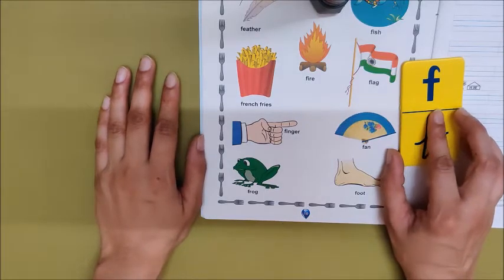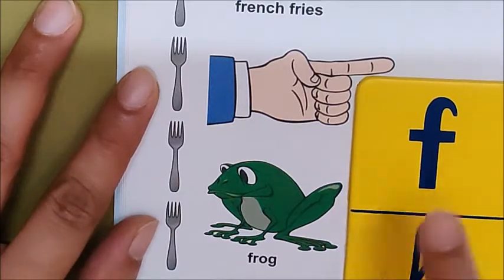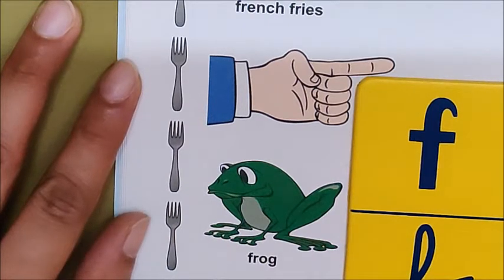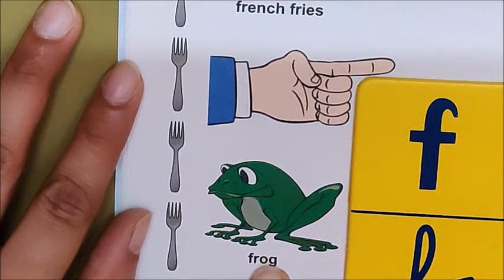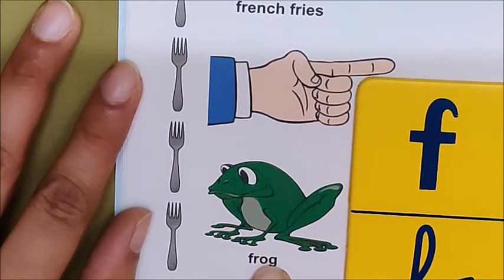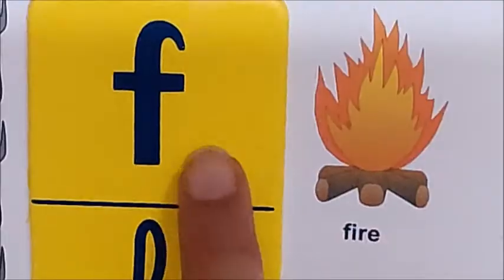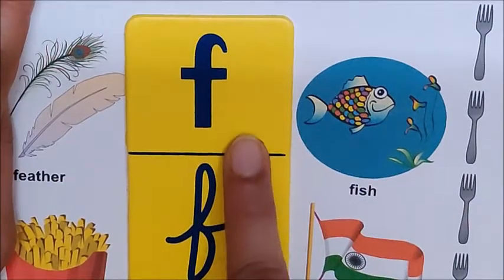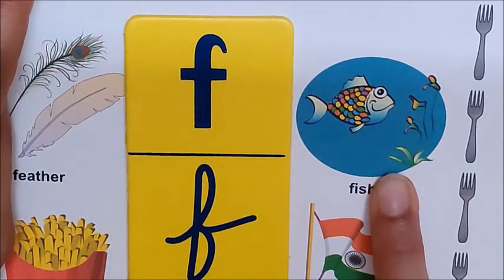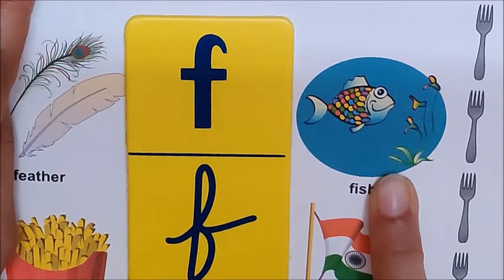Now, let us go to the next picture. F for frog. Children, frog can live on the land and also in the water. Let us go to the next picture. F for fire. Fire is very hot. You should not touch fire, children. Otherwise, you will burn yourself. F for fish. Fish lives only in the water.